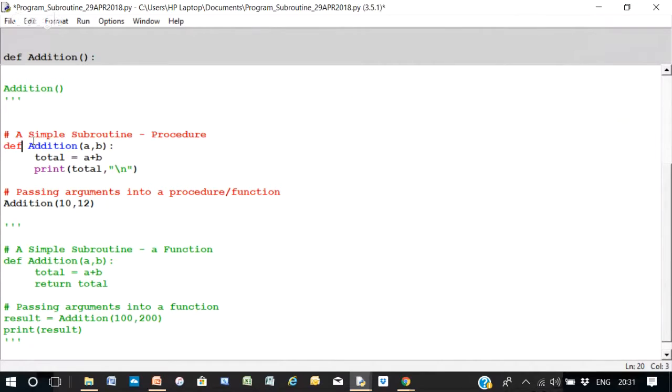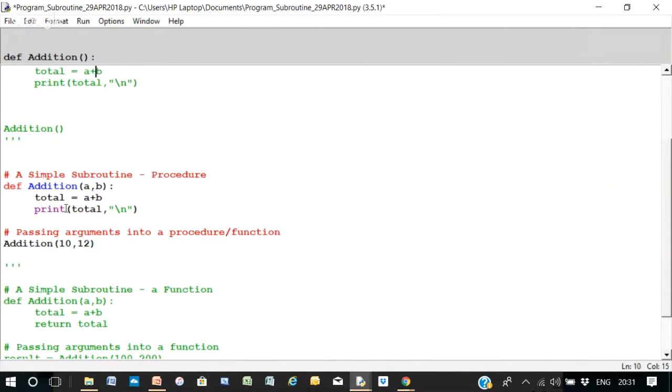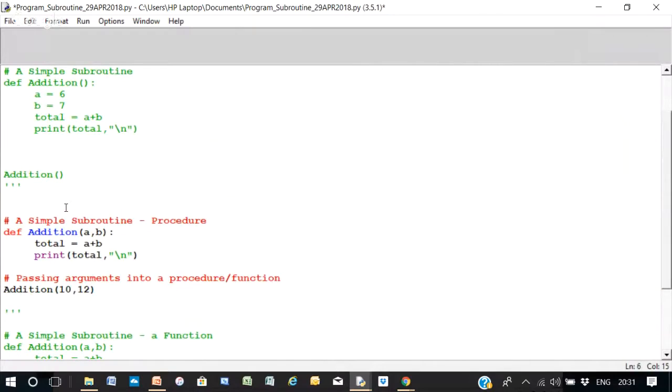So you've got def addition a, b, total equals a plus b, print total. So you call it by the statement addition 10, 12. So what's the difference between this subroutine or function and the previous one? The difference is that we are passing in parameters or arguments into the function. So 10 maps onto a, so a becomes 10 and b becomes 12.